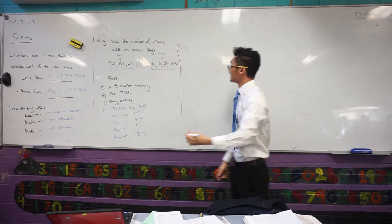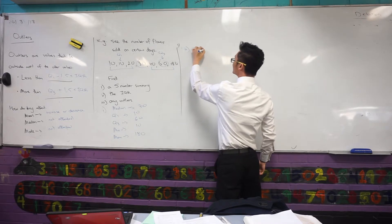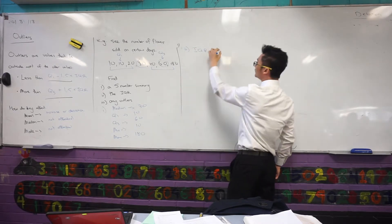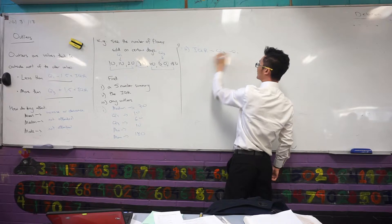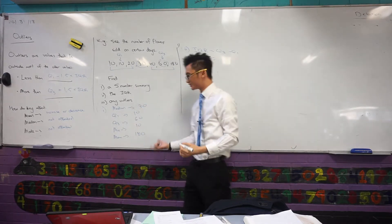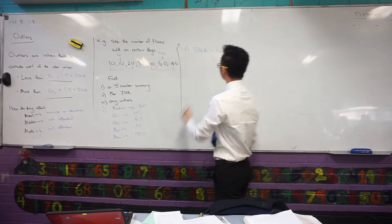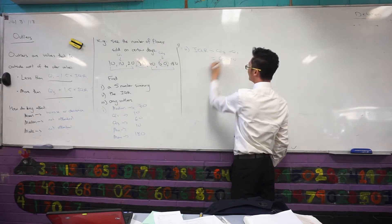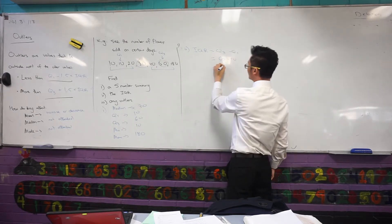Interquartile range, the interquartile range is equal to Q3 minus Q1. So all you have to do is go back to your table. You can see once you've laid out the solutions like this, it's very easy to see. Well, that's just 60 minus 10, and that's just going to be 50.